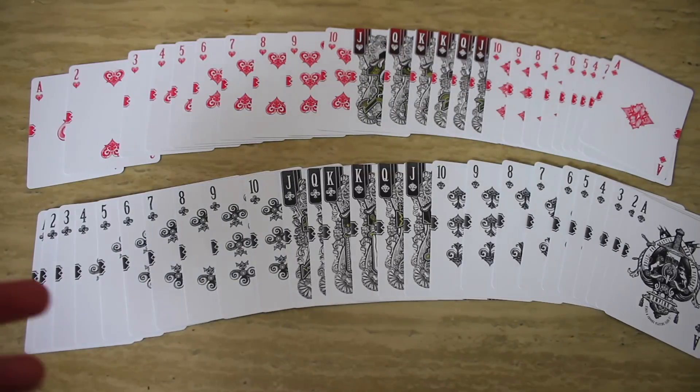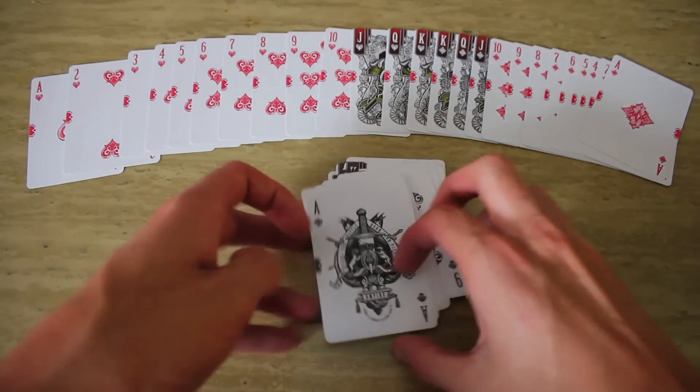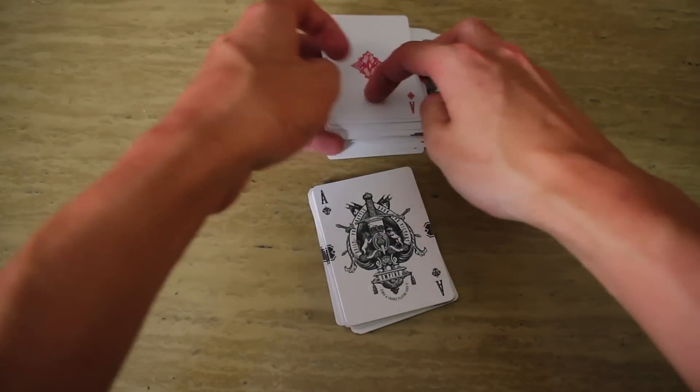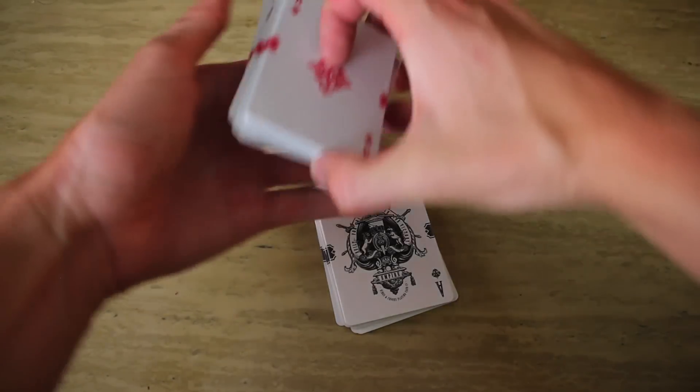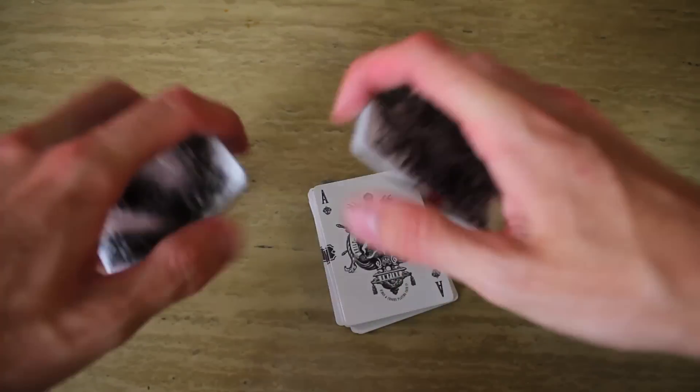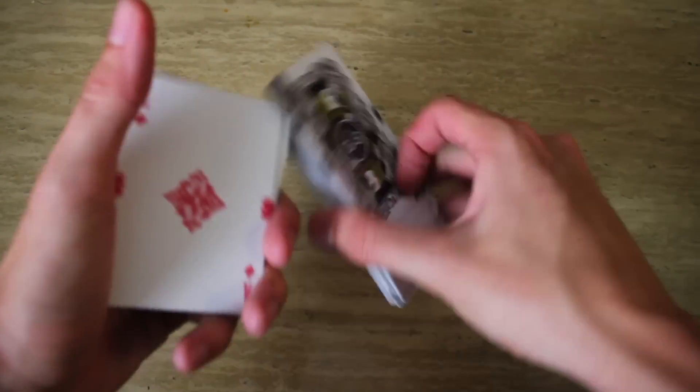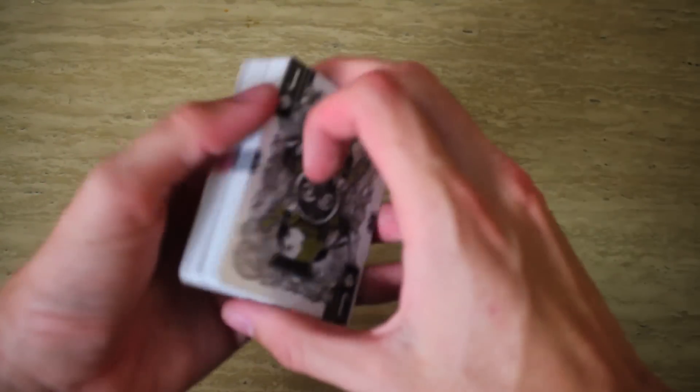I'll leave a link to his performance in the description and I'm just going to teach you the tutorial. The first thing you want to do is start by separating the reds from the blacks. They can be mixed together, they can be shuffled up. Just go through, separate them all, and put the blacks on the bottom.